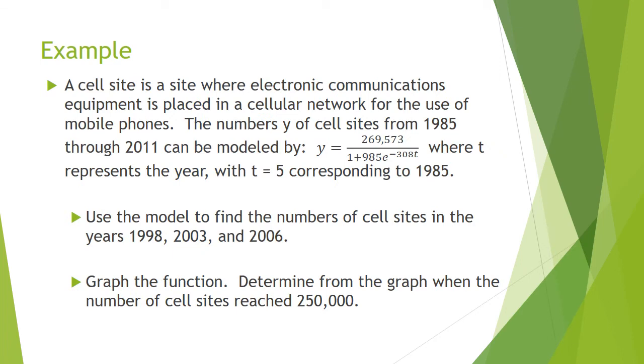A cell site where electronic communications equipment is placed in a cellular network for the use of mobile phones, the numbers Y of cell sites from 1985 through 2011 can be modeled by the logistic equation we see there, where T represents the year, with T equals 5 corresponding to 1985. So in other words, if we're talking about the year 1988, we're going to use 3 for T instead of 1988. So your T equals 0 year would be 1980. Use the model to find the number of cell sites in the years 1998, 2003, and 2006. So for 1998, you're going to use 18, for 2003, you're going to use 23, and then 26 for 2006. And then you're going to graph the function and determine when the number of cell sites reaches 250,000. Pause the recording, give this a try, and resume to check your answer.